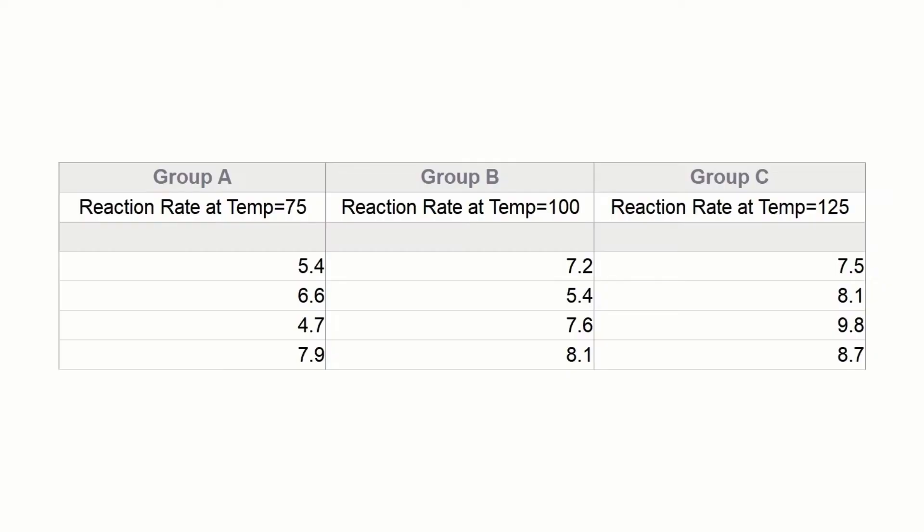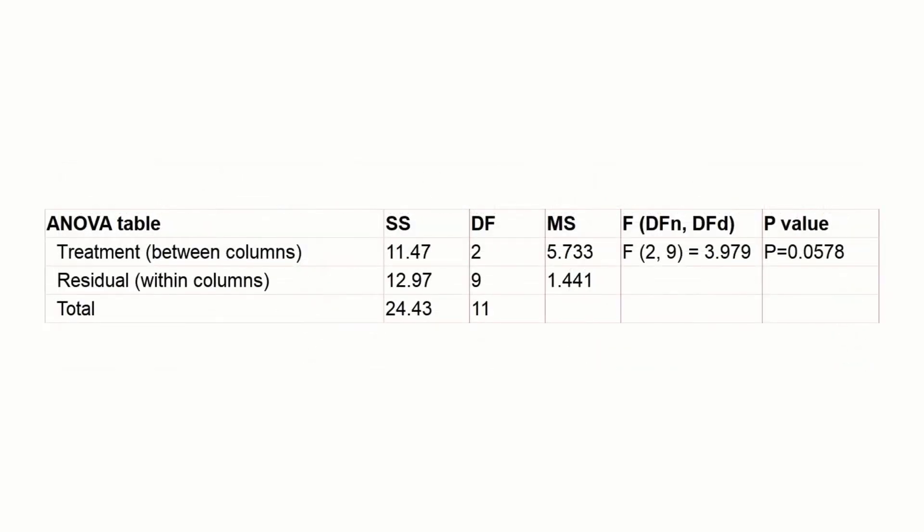Let's go through an example where both tools are used. Consider a chemical experiment where the reaction rate of a substrate is measured at three different temperatures. Here we have three balanced groups, which seems to indicate ANOVA is the right tool for comparing group means.